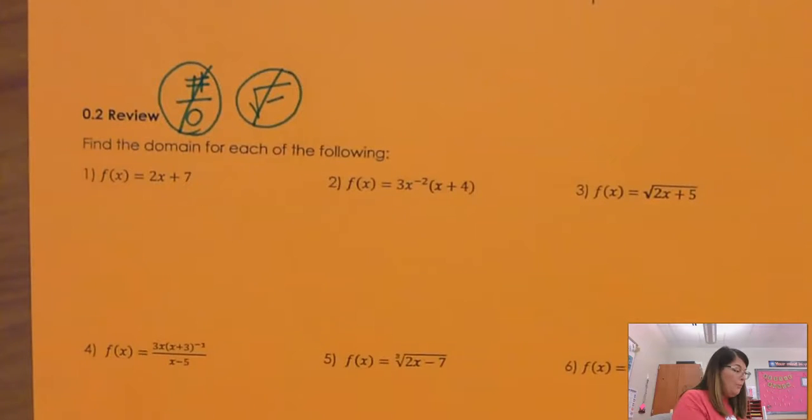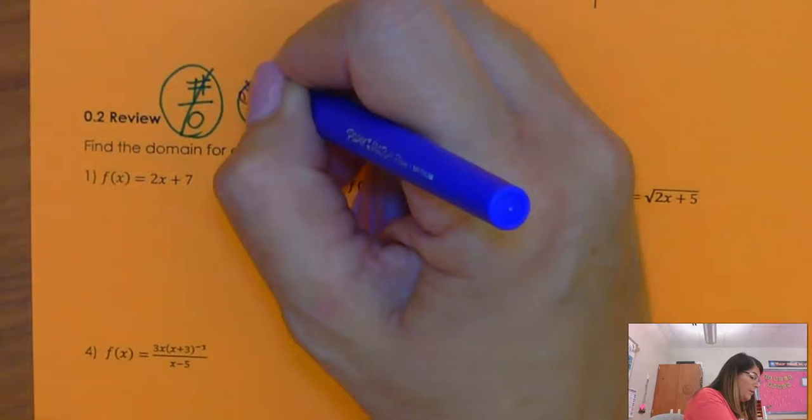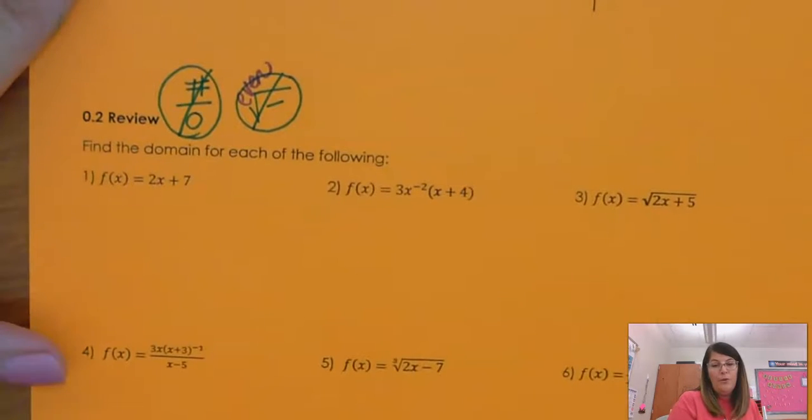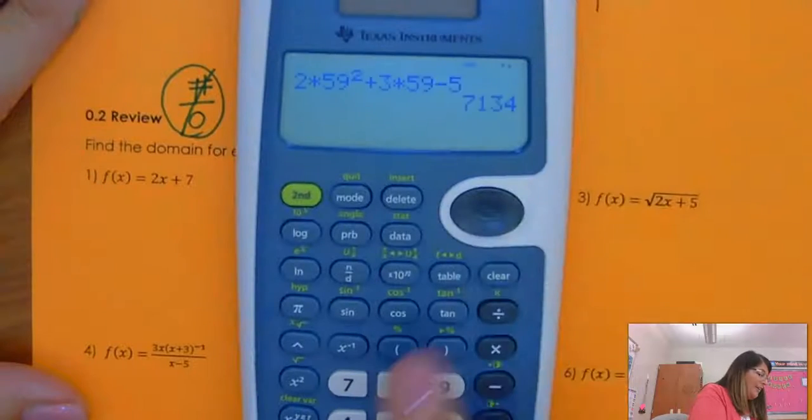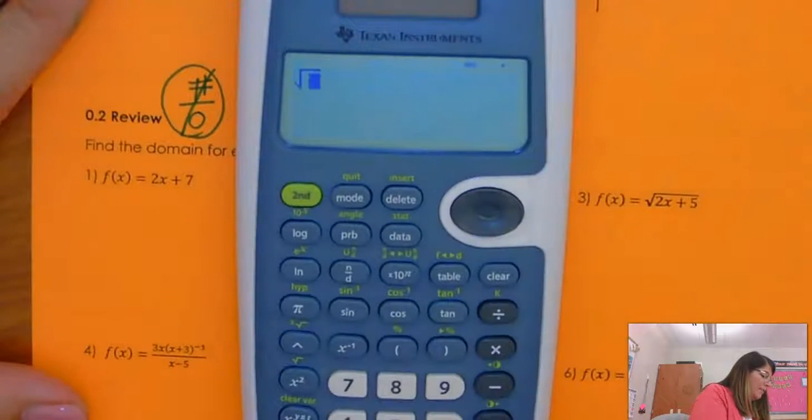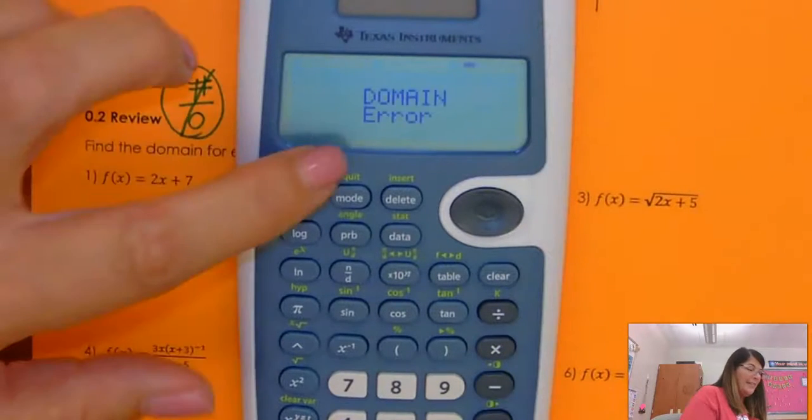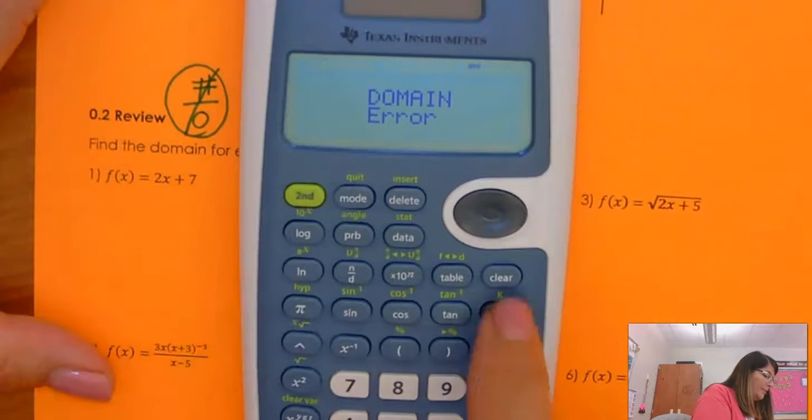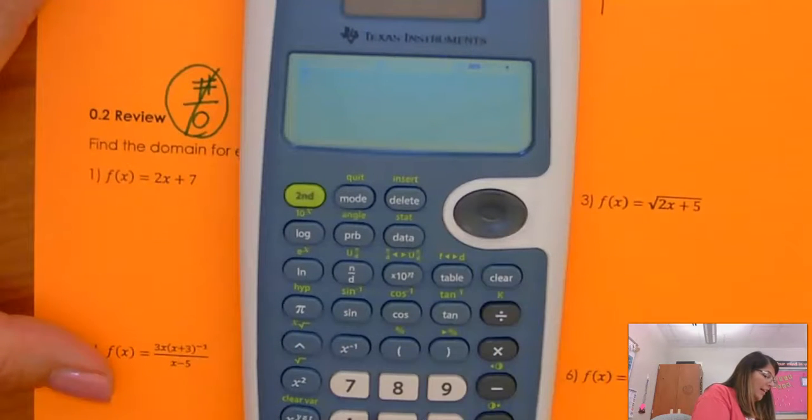Now, this is Pre-Calc 2. So when we talk about square roots, it's more than just square roots, it's any even root, like a fourth root or a sixth root. Because if you go to your calculator and you try to take a square root of a negative number, it's going to tell you a domain error.